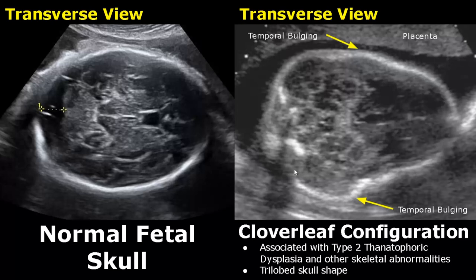The shape of the skull is trilobed. These bulging areas on either side are bulging of the temporal bones. The clover leaf configuration is caused by craniosynostosis of all the sutures — these bones join together too early and the skull shape is deformed.